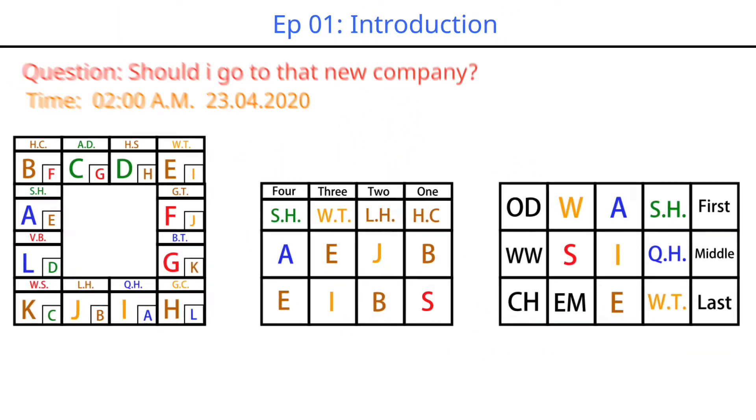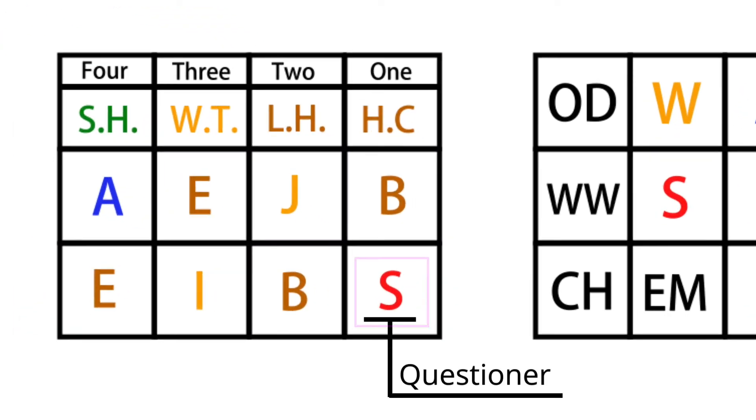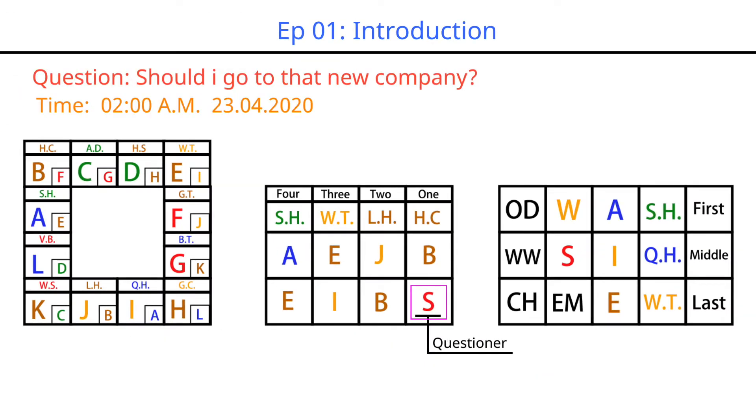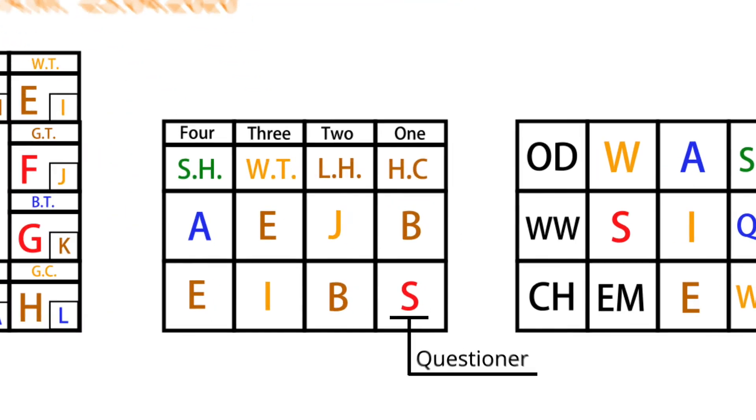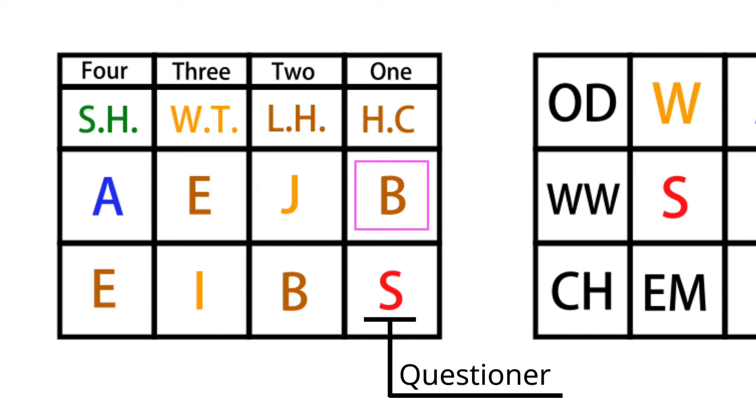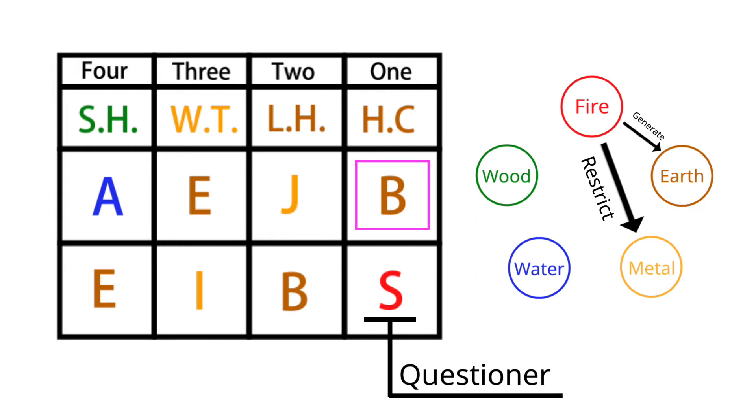In this type of prediction, the symbol of this position represents the questioner. Most of our judgments about the future situation of things are based on the relationship between other position symbols and this position symbol. So, S is the questioner, B is the symbol closest to the questioner S. The attribute of S is fire and the attribute of B is earth. The earth here is not the earth we live in, but the soil. Fire generates earth, which means that fire will make soil better, more and stronger.